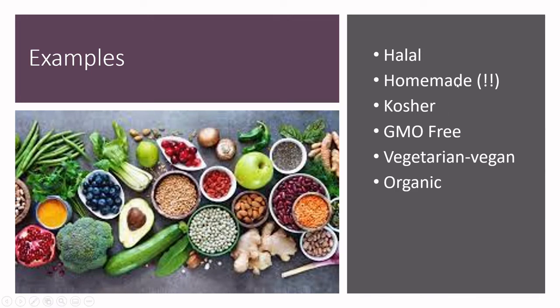'Homemade' is one example — and you might say, wait, aren't I a manufacturing facility? Concepts like homemade, artisanal, or 'created from a centuries-old recipe' are all method of production claims. Kosher, GMO-free, halal, vegetarian, vegan, and organic are also pooled into method of production claims. I'll mention the requirements for organic labeling when we jump to the Guide to Food Labeling for Industry.